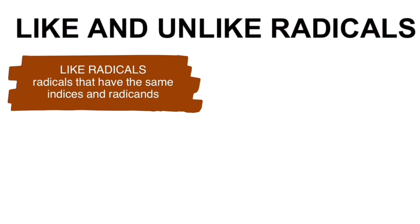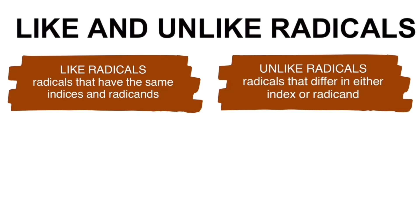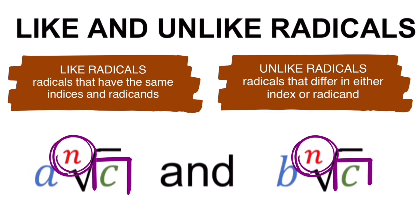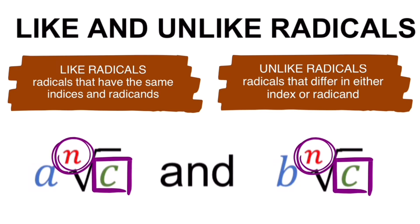Like radicals are radicals that have the same indices and the same radicand. Unlike radicals are radicals that differ in either the radicand or the index. The only two parts we look at to determine like or unlike radicals are the indices and the radicands. As long as both indices are the same and both radicands are the same, we call them like radicals — it doesn't matter if the coefficients are different.